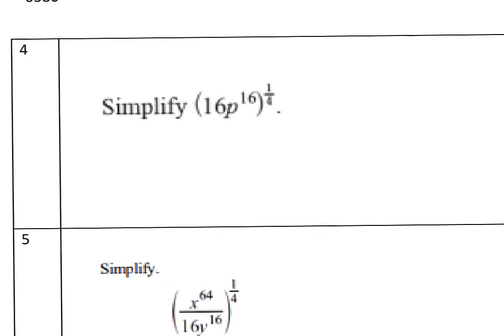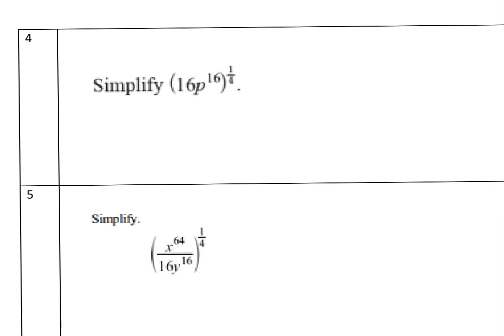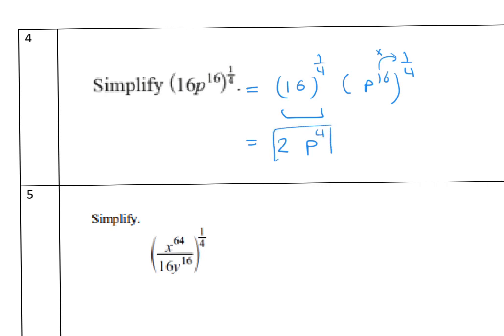Problem 4: simplify (16b^16)^(1/4). Distribute the power: 16^(1/4) and b^16 all to the power 1/4. Using a calculator, 16^(1/4) equals 2. For b: multiply 16 times 1/4 equals 4, so b^4. The final answer is 2b^4.